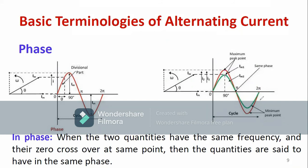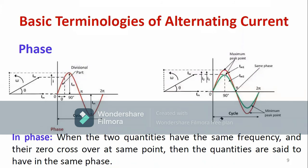Looking at the diagrams, two quantities are shown — one in red and one in green. The maximum points are different, but both quantities start at the same point and terminate at the same point; the amplitude is different but the frequency remains the same. Both quantities Im1 and Im2 are in the same phase. When two quantities have the same frequency and the same zero crossing point, they are said to be in-phase quantities. If the zero crossing points are not the same, then the two quantities are out of phase.